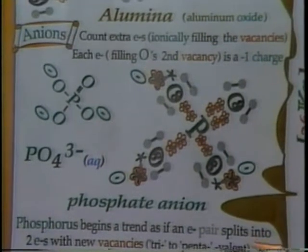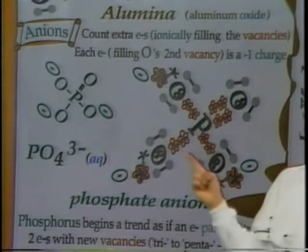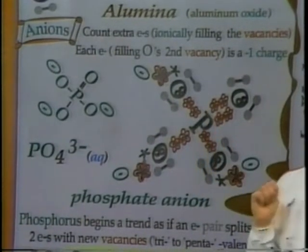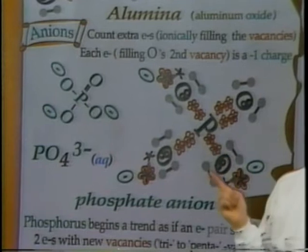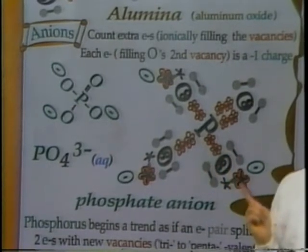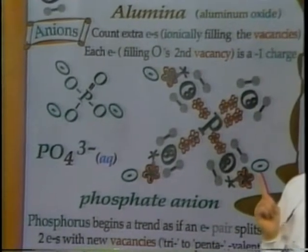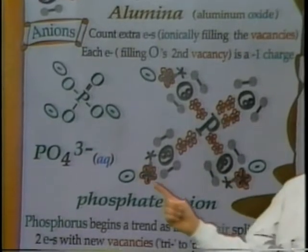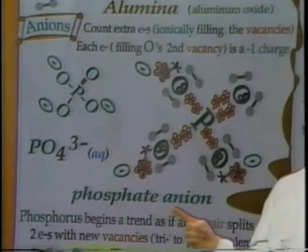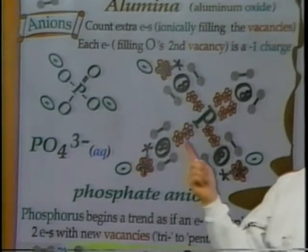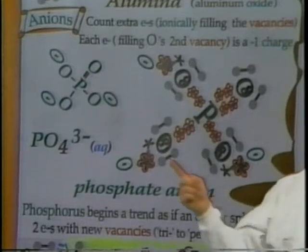Moving away from the octet: phosphorus can actually form five covalent bonds, which is ten electrons. Oxygen here still has eight electrons and adheres to the octet. With one, two, and three oxygens each carrying a negative charge from their electrons, this gives a three-negative charge overall to what's called the phosphate anion. So covalent bonding here has five bonds for phosphorus, while oxygen still adheres to the octet.